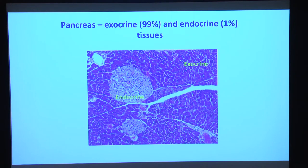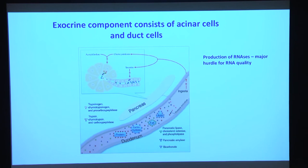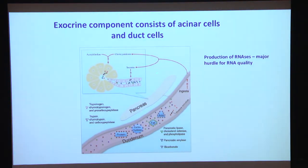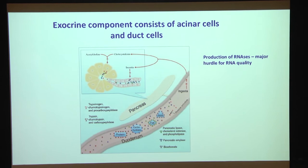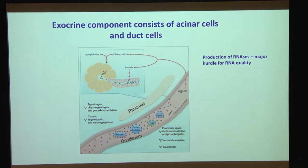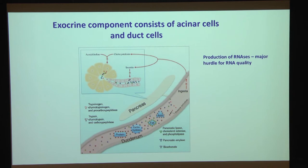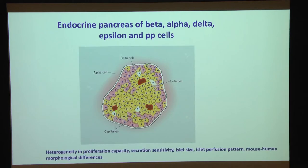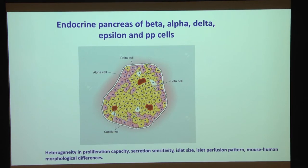This disproportionate importance of the 1% endocrine tissue raises questions about specifically enriching for it. The exocrine pancreas is the source of enzymes in our digestive system and, importantly, also the source of most RNases in our body — which is very bad for scientists handling RNA. The endocrine pancreas contains the Islets of Langerhans with known cell types: beta, alpha, delta, epsilon, and PP cells, plus other unknown cell types.